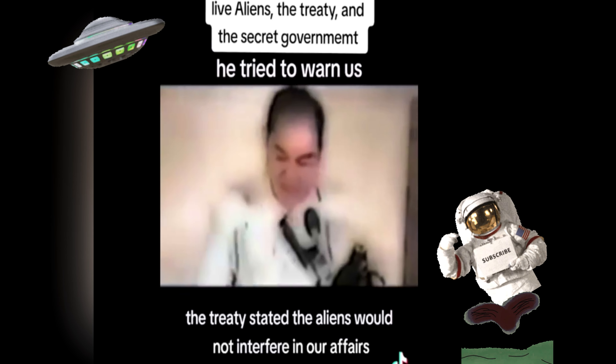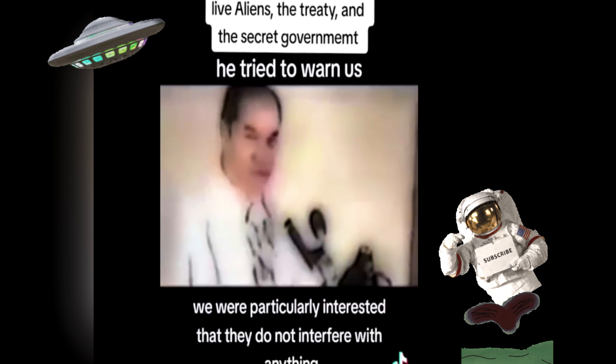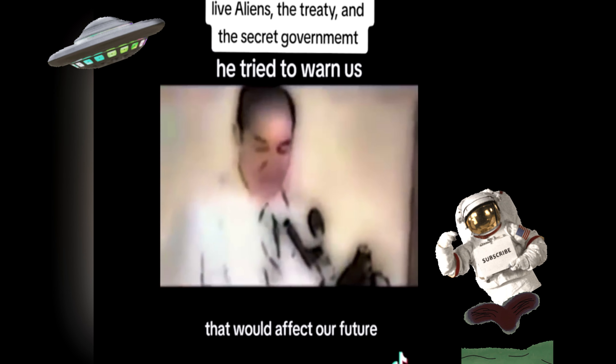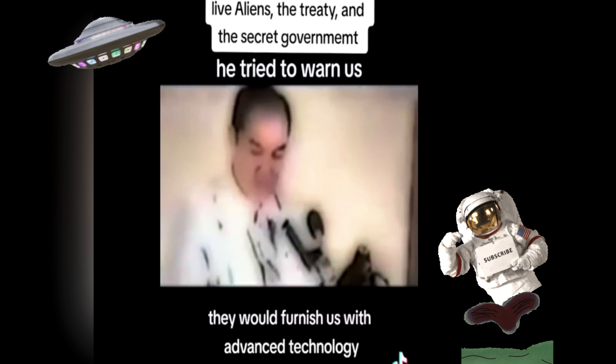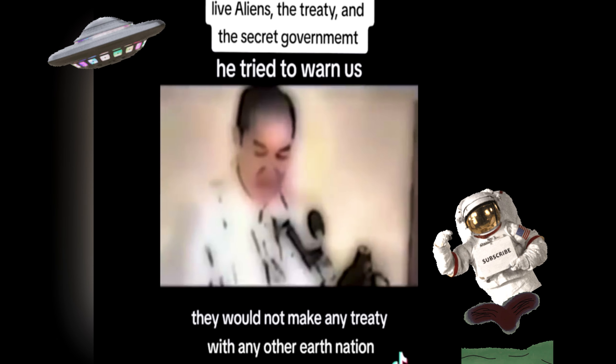The treaty stated the aliens would not interfere in our affairs and we would not interfere in theirs. We were particularly interested that they do not interfere with anything that would affect our future, which has been violated. We would keep their presence on Earth a secret. They would furnish us with advanced technology and help in our technological development. They would not make any treaty with any other Earth nation.